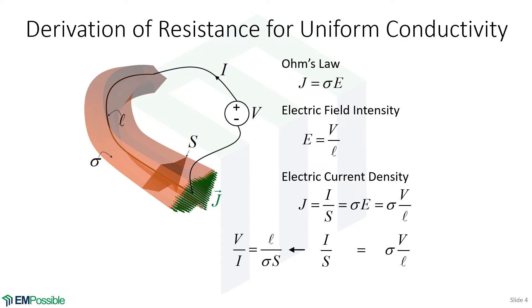We rearrange this a little bit. So we bring V on the top, we'll bring I to the denominator, we'll bring the sigma and l over to the other side, and we end up with this expression. Well, V over I is the definition of resistance. So for this resistor, the expression on the right side of the equation is how we would calculate the resistance.